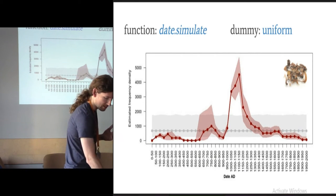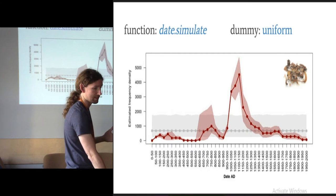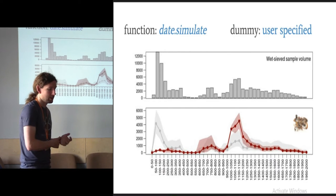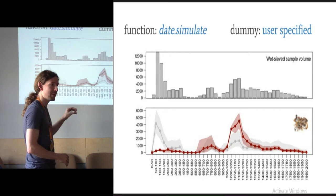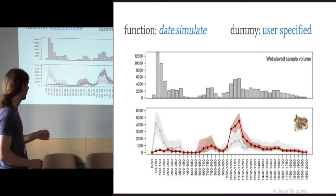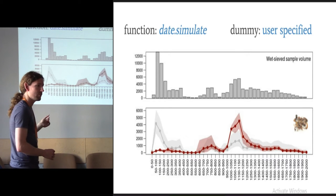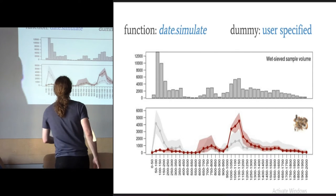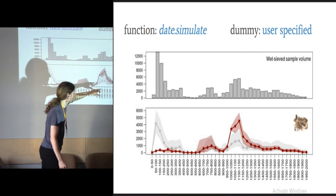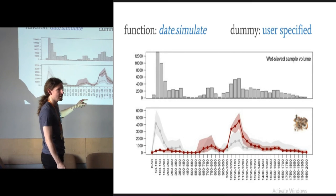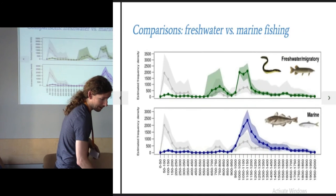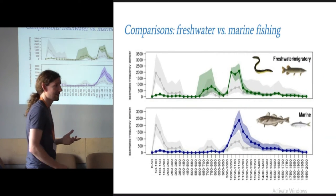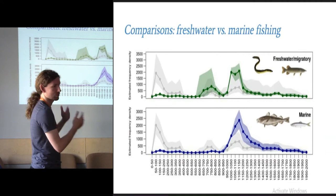It's going to be dependent on the amount of research that's been done, research intensity. So what you can also do is feed in a user-specified dummy, which in this case, I did the aoristic sum of the wet-sieved sample volume over time. How many litres of soil have been sieved in London by MOLA over time? You can see they've actually sampled the early Roman period to death. But despite that, if you run it through as the dummy model, this grey band in the background is what you would expect if the only factor deciding how many bones you get is how much sieving you do. In which case, you'd expect lots of Roman fish and you don't get any. So that's quite reassuring then.